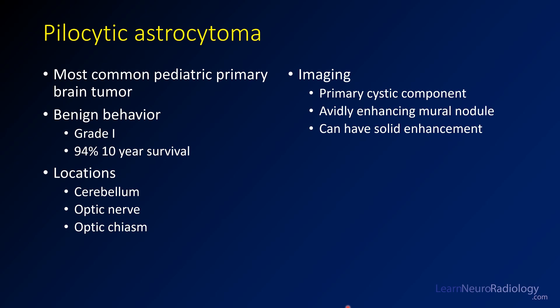Pilocytic astrocytomas are the most common pediatric primary brain tumors. This is a grade one WHO tumor with an excellent 10-year survival of about 94%. The most common locations are the cerebellum, optic nerve, and optic chiasm. In pediatric patients, they tend to be in the posterior fossa — that's the classic location. Classically, you'll see a cystic lesion with an avidly enhancing mural nodule, though solid enhancement, as in this case, can also occur.